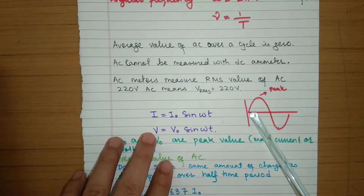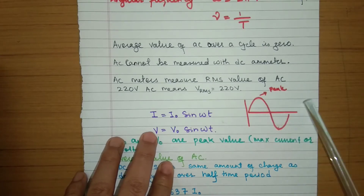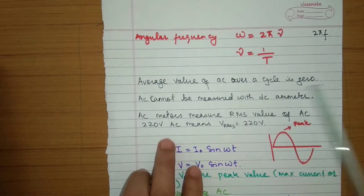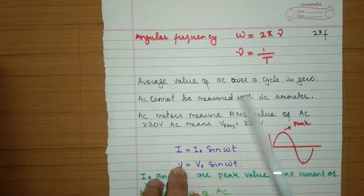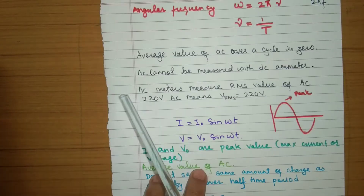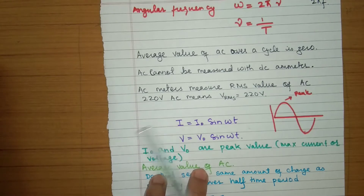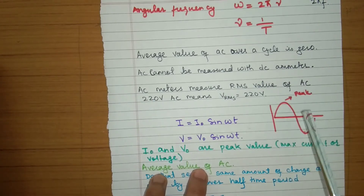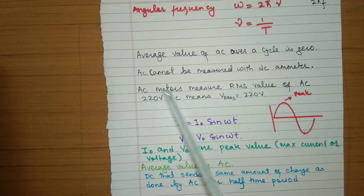The average value of AC over a complete cycle is zero — the positive and negative sides cancel out. That is why we cannot use a DC ammeter or voltmeter to measure alternating voltage or current. AC meters like ammeters and voltmeters measure the RMS value, and they make use of the heating effect of current.